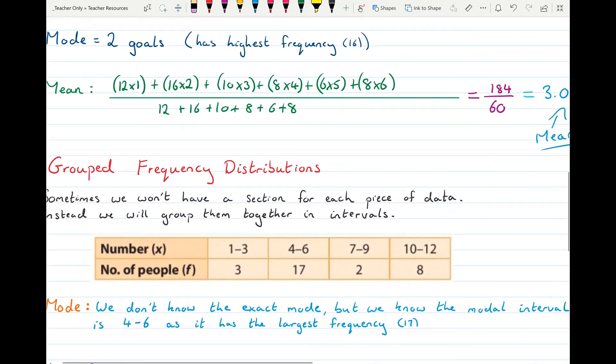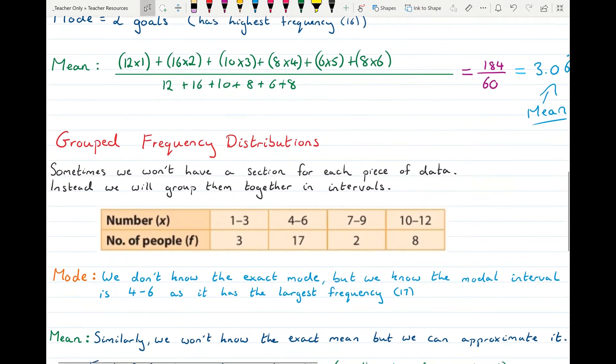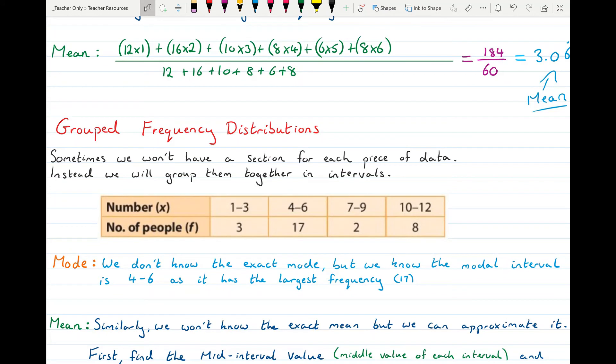To find the mode and mean of one. Well the mode, we don't know the exact mode, the exact value that appears the most often, but we do know the modal interval. So which interval had the most people in it? From 4 to 6 because that had a frequency of 17 or 17 people in it. So that's the modal interval.